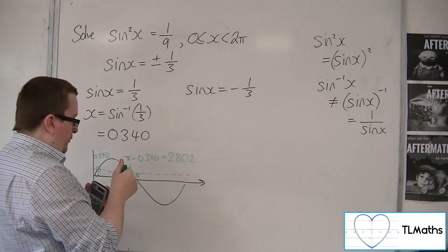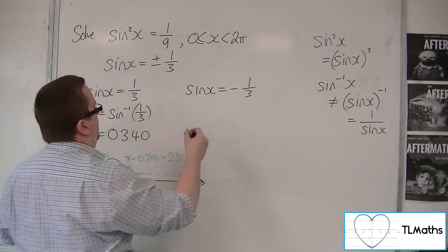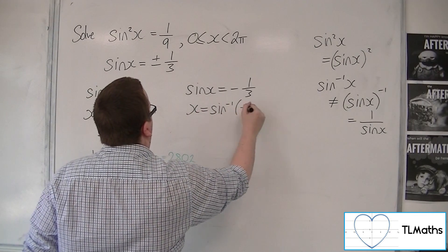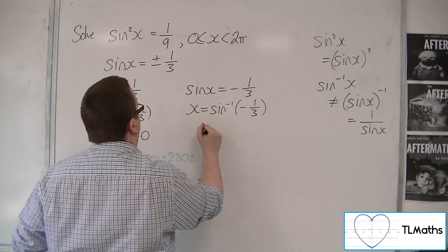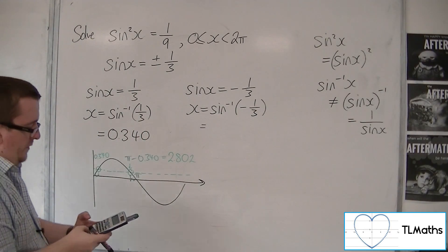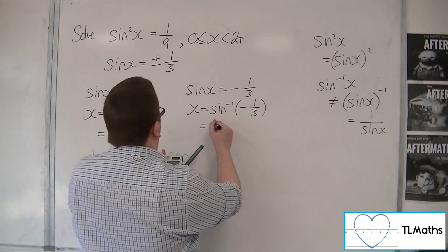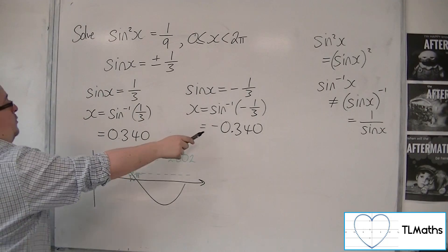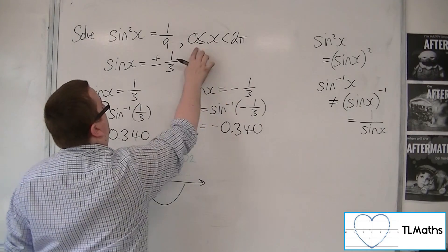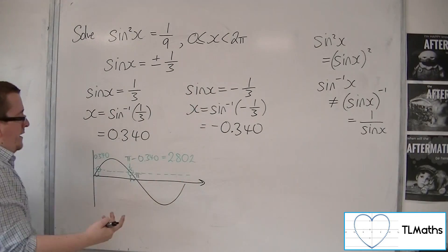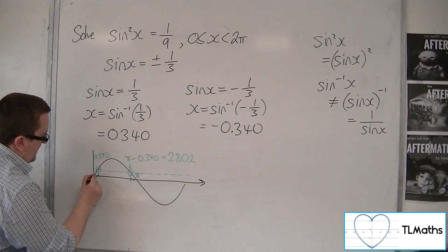Now if I solve sinx equals minus 1/3, inverse sine both sides. So we're going to get inverse sine of minus 1/3. So inverse sine of minus 1 over 3 is actually minus 0.340. Now minus 0.340 is not between 0 and 2π. There's no negative values here. So the curve extends.